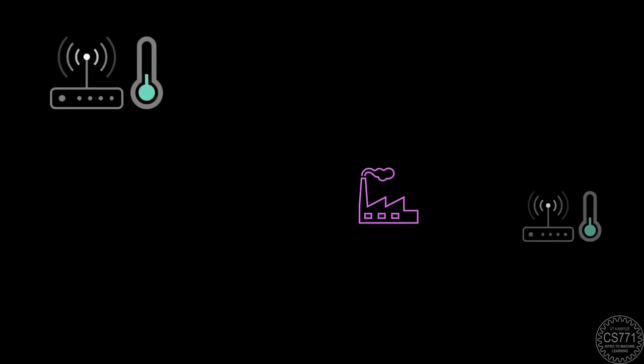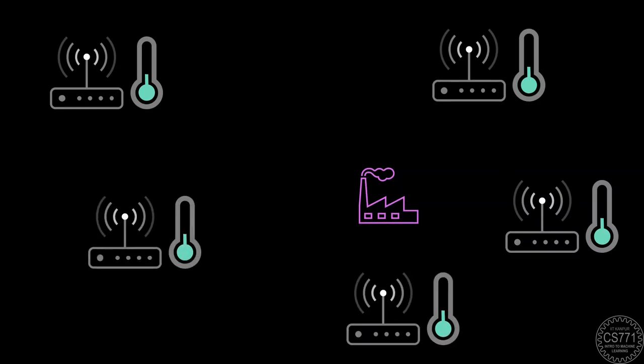Modern industrial plants are vast and cannot rely on manual monitoring alone to make sure everything is working well. Thus, it is common to use a variety of digital sensors to make sure all equipment in the factory is working properly. To illustrate this, in this toy example, we have a factory that has placed temperature sensors all over the place to raise an alarm if there is overheating or a fire.